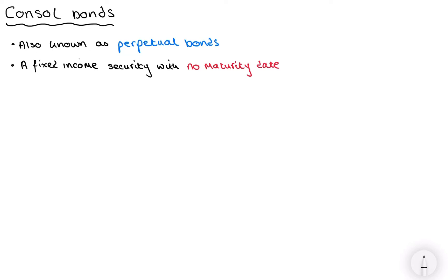So without further ado, let's get on to console bonds. So console bonds, also known as perpetual bonds, are a fixed income security with no maturity date.